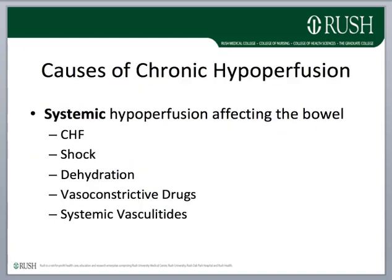The causes of chronic hypoperfusion are systemic in nature and simply happen to affect the bowel. These include the usual suspects: congestive heart failure, shock, dehydration, vasoconstrictive drugs, and uncommonly systemic vasculitides.